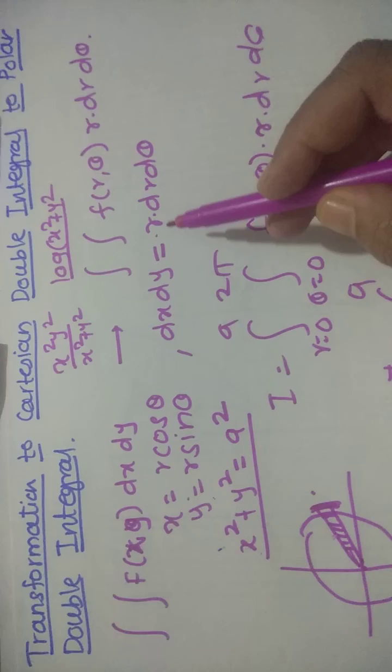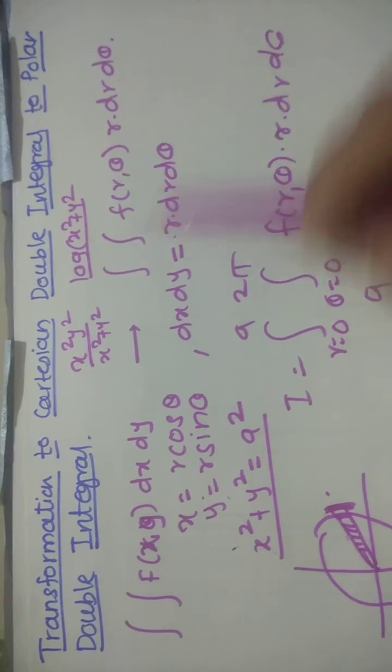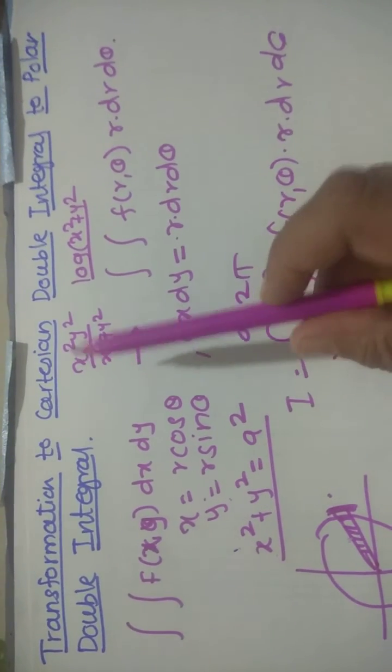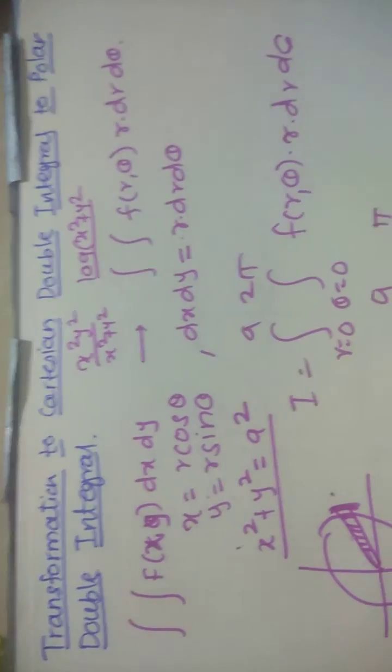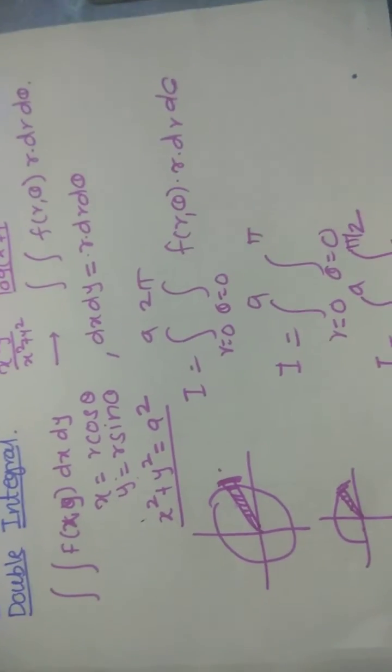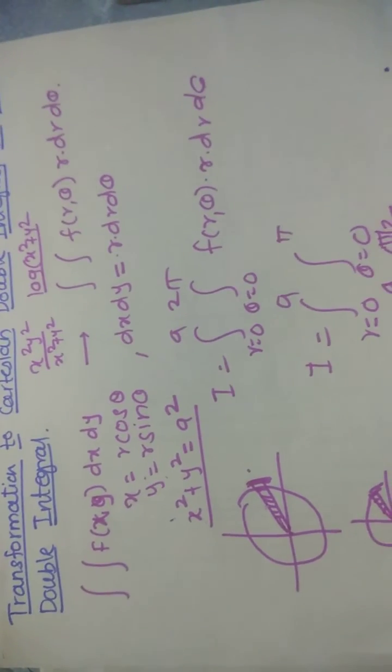And dx dy equal to r dr d theta, we can convert the Cartesian double integral to polar double integral. In the next video, we'll discuss how to solve examples on it. Thank you.